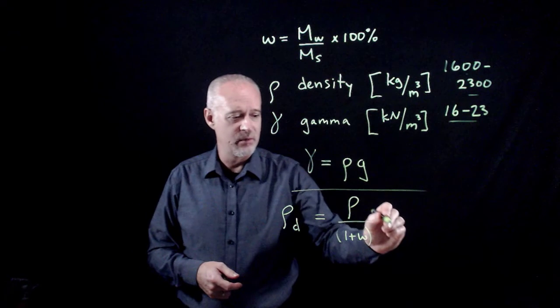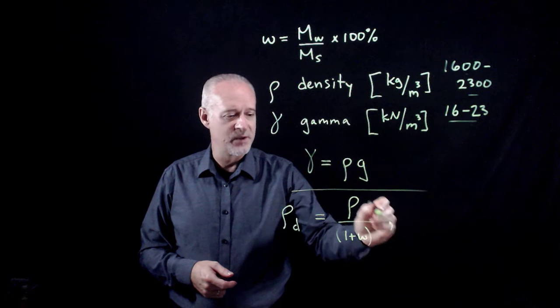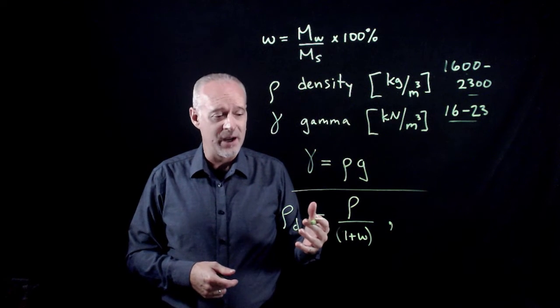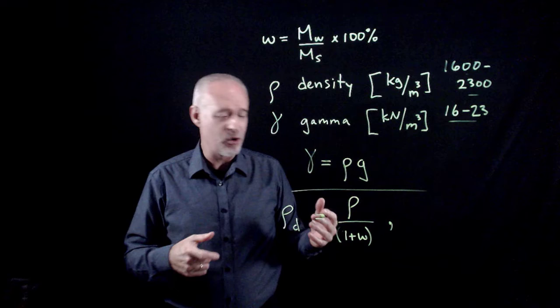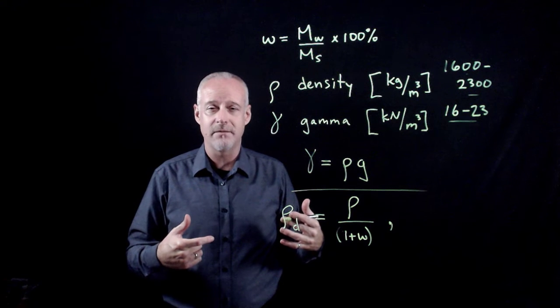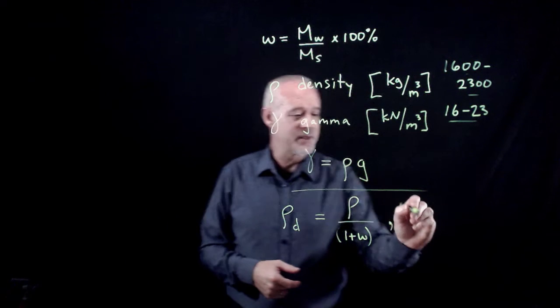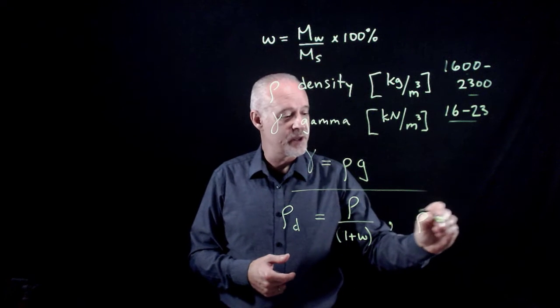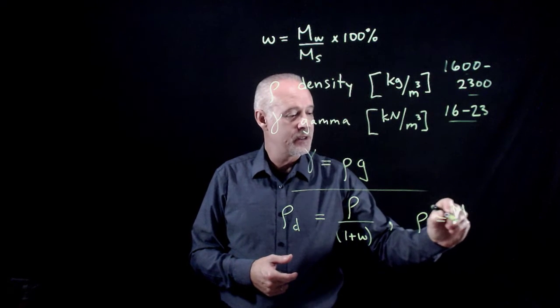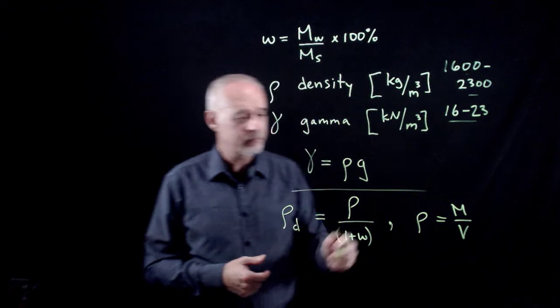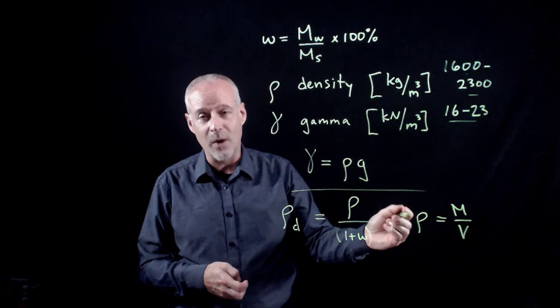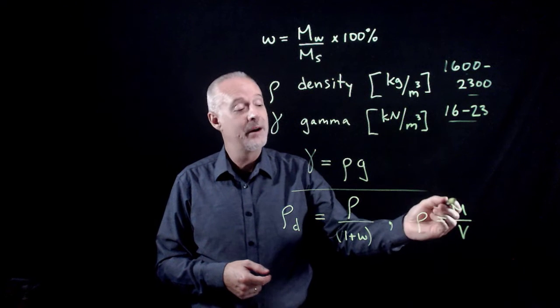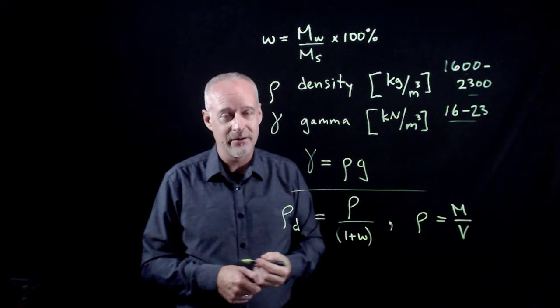Where does this come from? I think probably the easiest way to think of this is if you go back to the definition of what density is, where density universally is expressed as mass divided by volume. Similarly, unit weight gamma is expressed as weight divided by volume or mg divided by V.